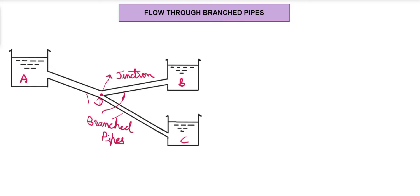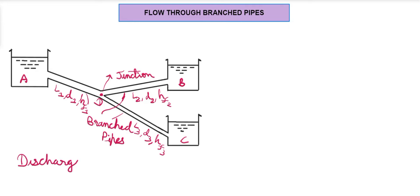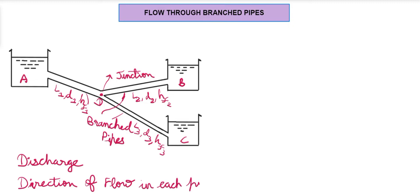For each of these pipes, we know the length, diameter, and the coefficient of friction. HF1, HF2, and HF3 are the head losses due to friction for each pipe, and L1D1, L2D2, L3D3 are the lengths and diameters respectively. What we want to find is the discharge and the direction of flow in each of these pipes.